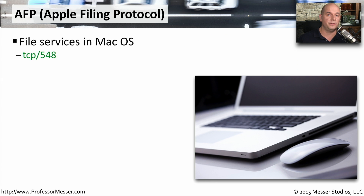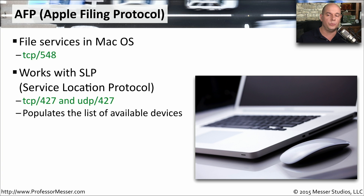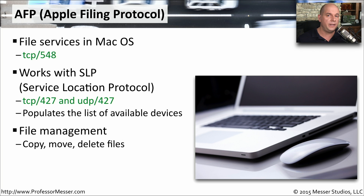While Microsoft uses Server Message Block, or SMB, Apple's Mac OS uses AFP, or the Apple Filing Protocol, to transfer files between Mac devices, generally over TCP port 548. This works in conjunction with SLP, the Service Location Protocol, running on TCP port 427 and UDP port 427, which populates a list of services on the network so devices can be easily found. The Apple Filing Protocol is a full-featured file management protocol that allows copying, moving, deleting, and making changes to the file system.